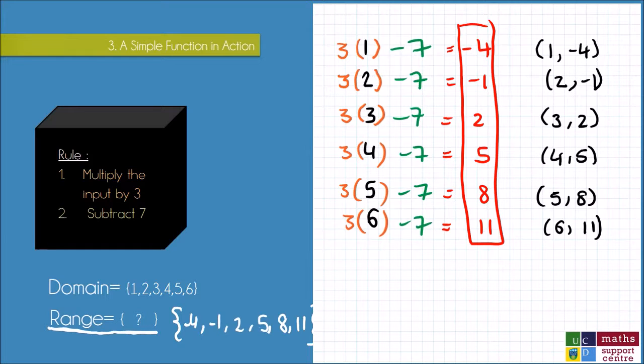So hopefully this seems quite straightforward to you, that we're just applying a rule to a number, but I think where people get confused is when the function notation is brought in. So I'm just going to show you how I use function notation for this particular example. So when I use function notation, I just want to describe my rule in general, so what I'm doing, and I don't want to use words.